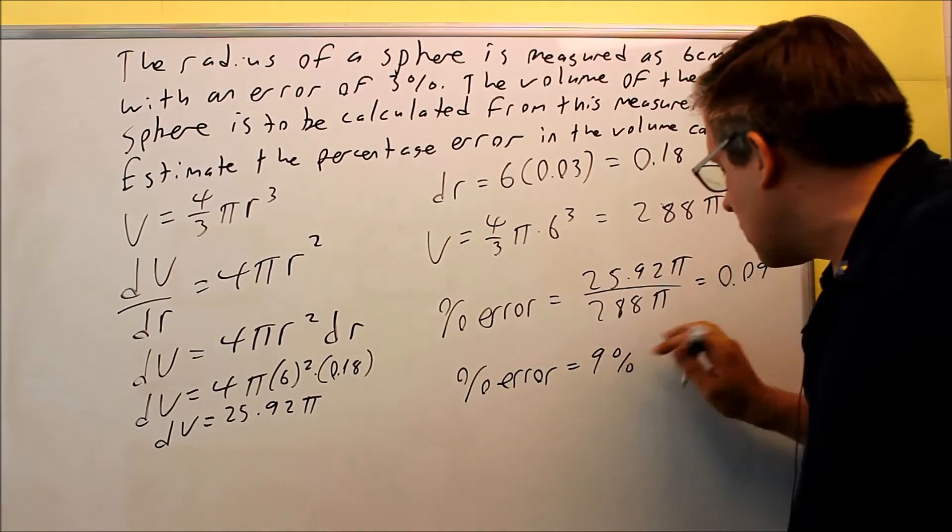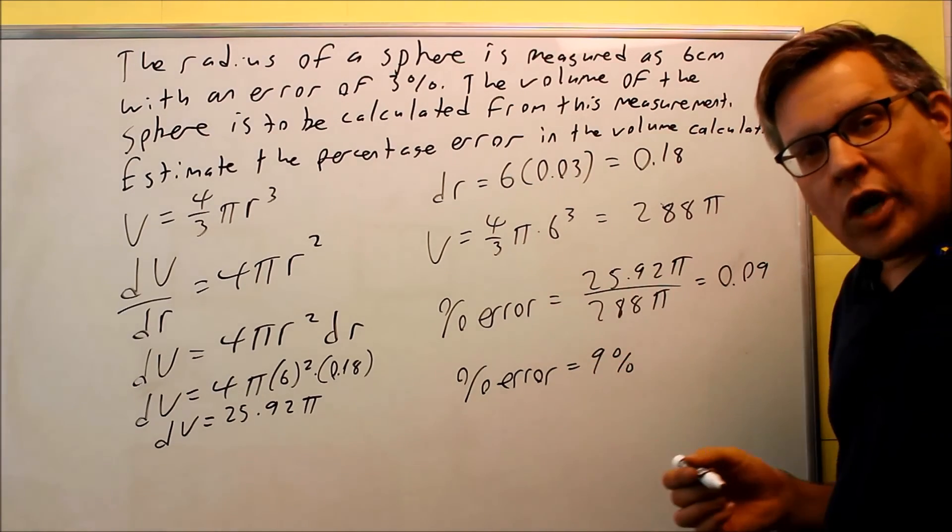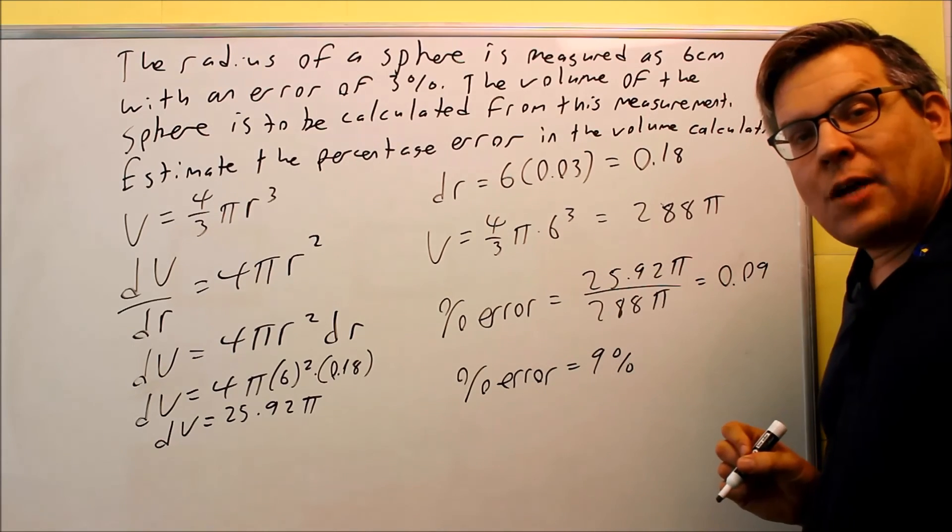So what that means is that if I'm off by 3% on the measurement of my radius, when I calculate the volume, that means I'm going to be off by roughly 9%.